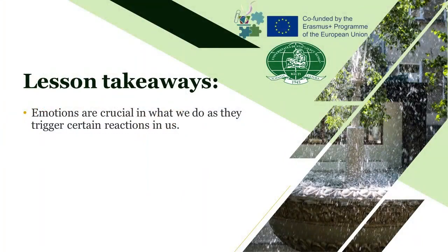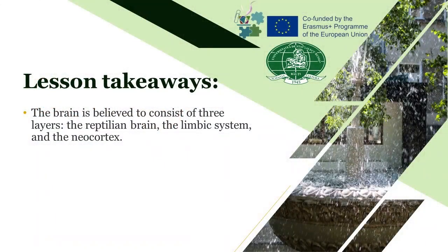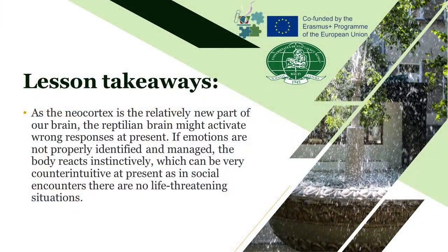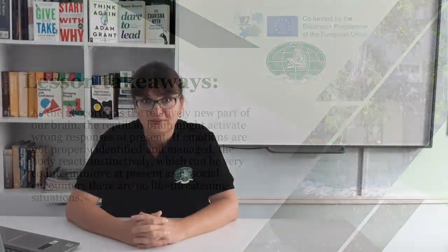So what are the lesson takeaways? Emotions are crucial in what we do, as they trigger certain reactions in us. It's useful to look at the brain as consisting of three parts: the reptilian brain, the limbic system, and the neocortex. As the neocortex is the relatively new part of our brain, the reptilian brain might activate wrong responses at present if emotions are not properly identified and managed. The body reacts instinctively, which can be very counterintuitive, since social encounters are not life-threatening.